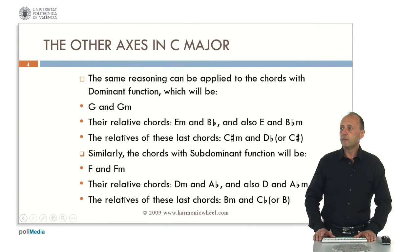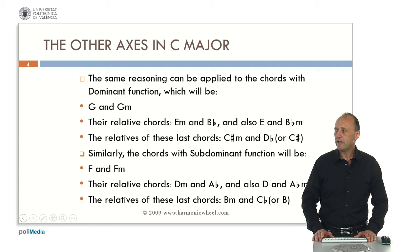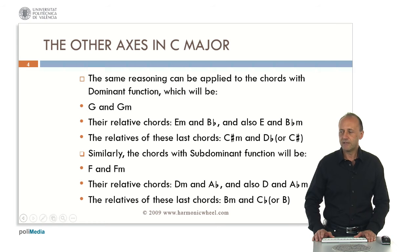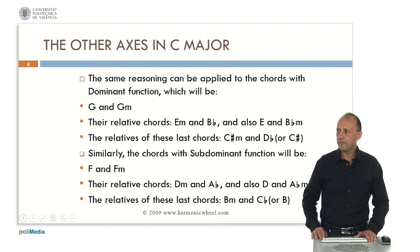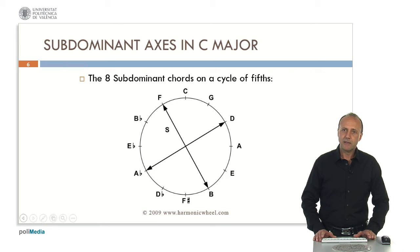If we repeat the process for the subdominant chord, which is F major, we find its parallel F minor, the relative chords D minor and A flat major, its parallel chords D major and A flat minor, and the relatives of these last chords: B minor and C flat major or B major. We can represent these eight chords on a cycle of fifths as well, and we again find two axes.